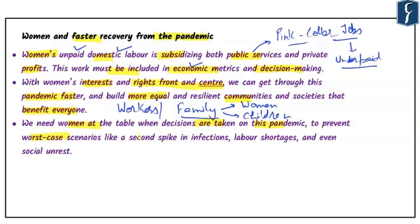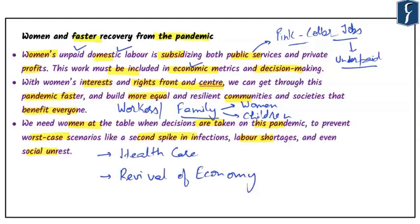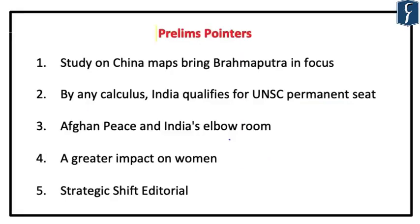Having women at decision-making tables will help prevent worst-case scenarios like a second spike in infections, labor shortages, and social unrest. The focus right now is on healthcare and the revival of the economy, but if we protect the interests of women, both these initiatives will automatically come into the picture. This will ensure faster recovery from the pandemic, making this issue important from the perspective of social issues.